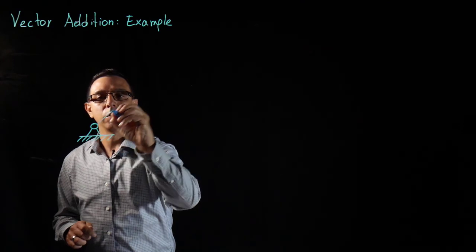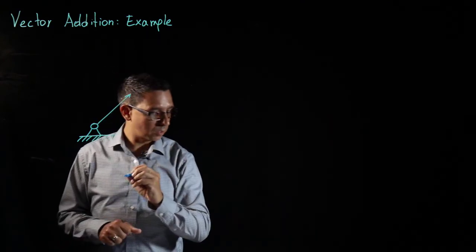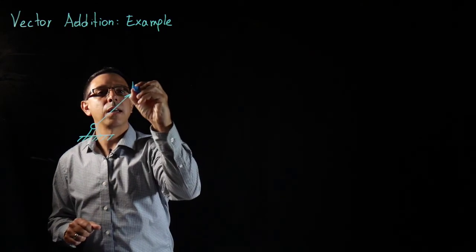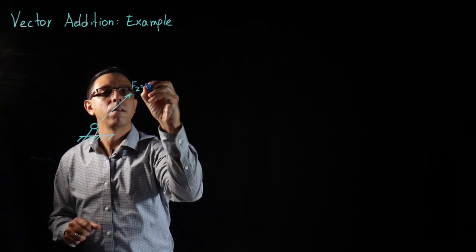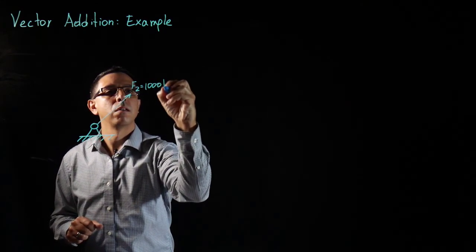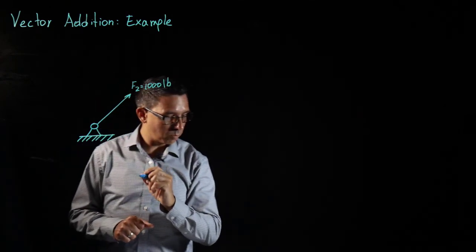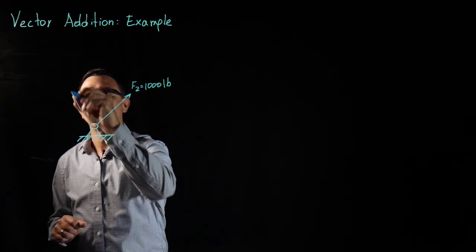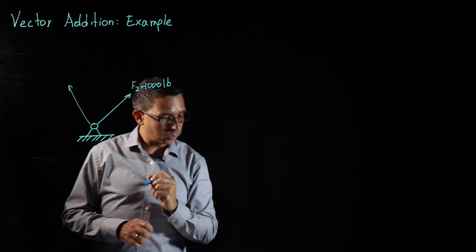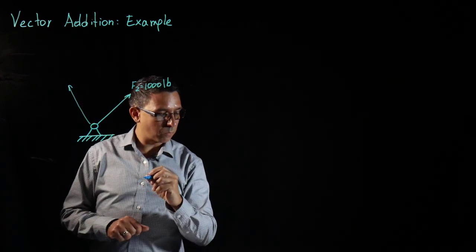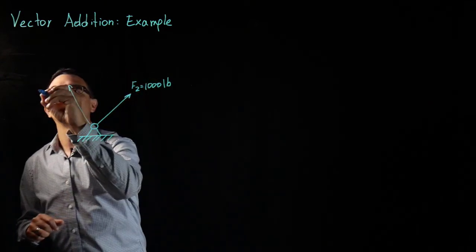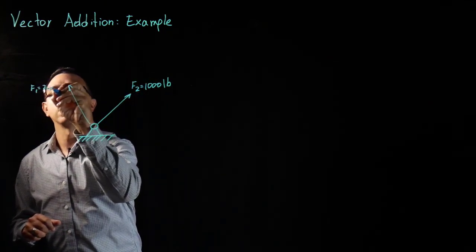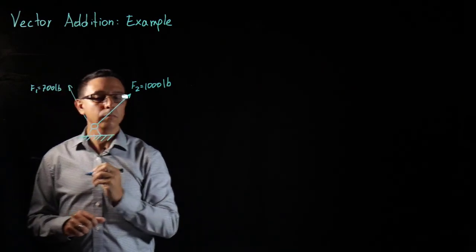and we have a couple of cables. One cable is going in this direction and the magnitude of this force is a thousand pounds. Let's call that F2. And the other cable is going in this direction over here. And let's say that the magnitude of that force is 700 pounds. So this F1 is 700 pounds.